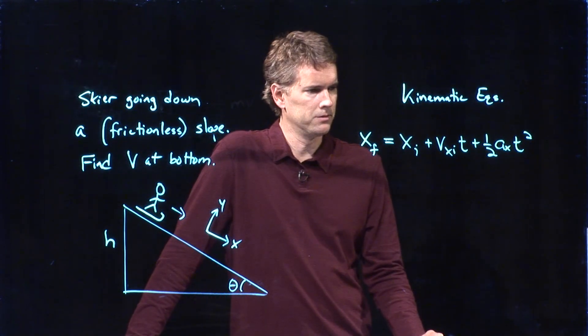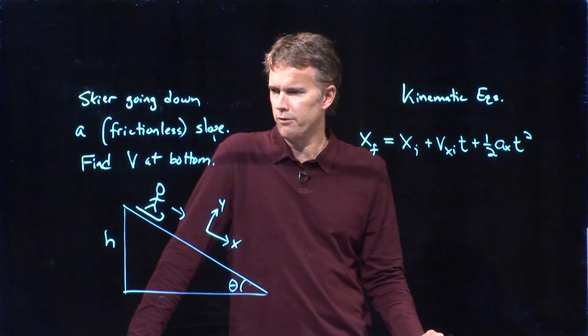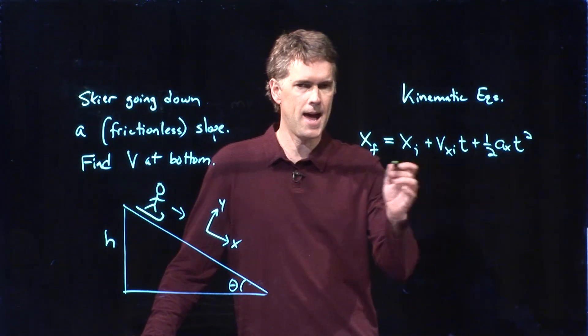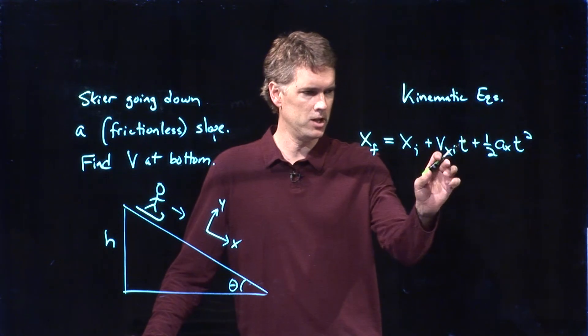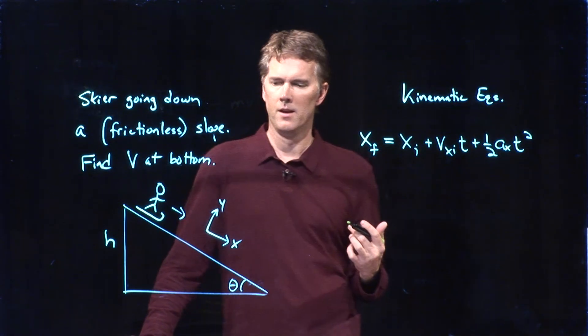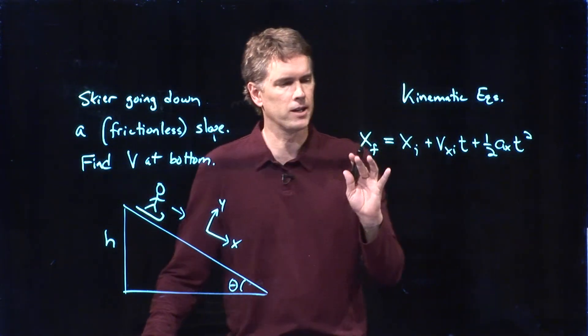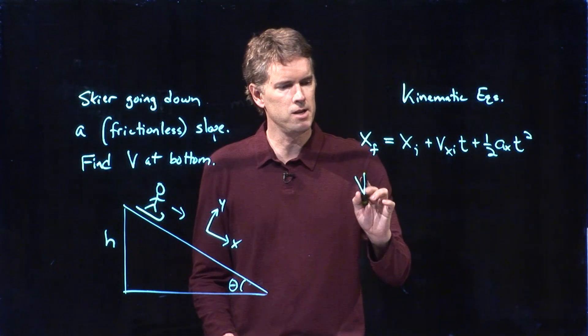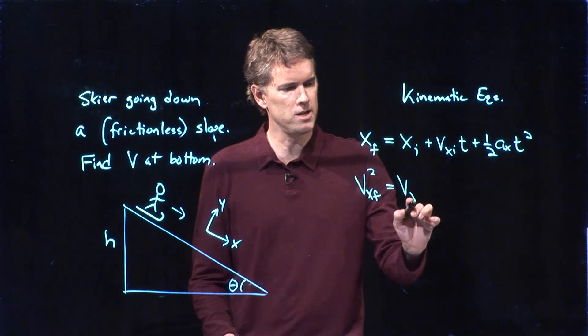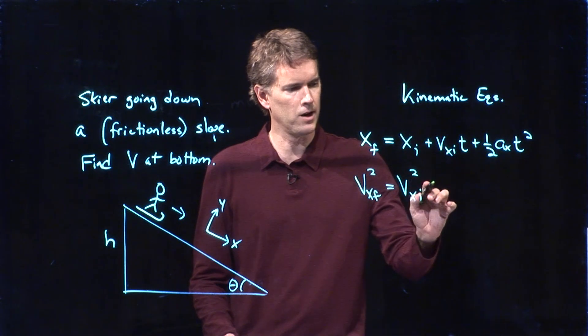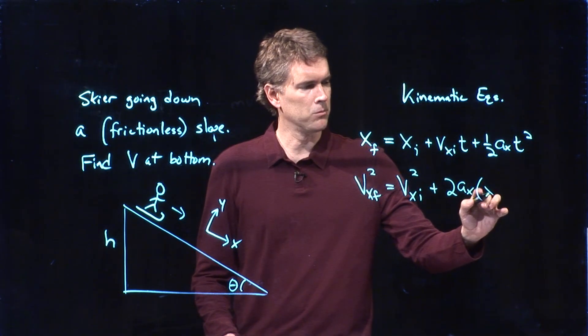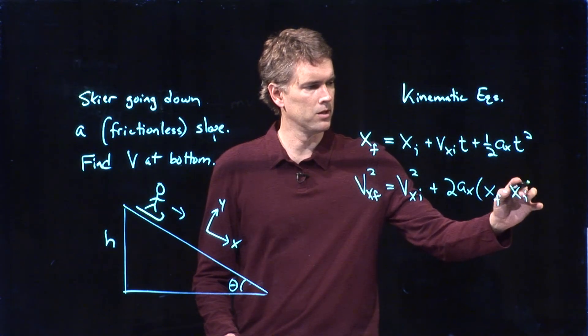That looks like it might help us. Except if we're looking for v at the bottom, we don't really have v at the bottom in here. We have v initial, but we don't have v final. So let's go back to our kinematic equations and let's look at a different one. v x final squared equals v x initial squared plus 2 a sub x times x final minus x initial.